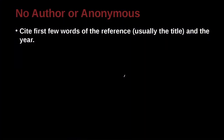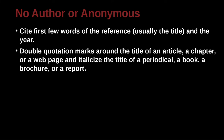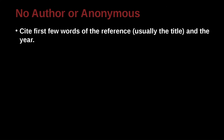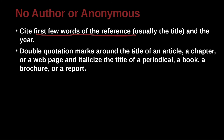Sometimes you cite a paper that has no author, or what we call an anonymous author — an author who didn't provide their name. You can address this by using the first few words of the reference, which is usually the title of the article or the book. Double quotation marks are around the title of an article, a chapter, or a web page, and italicize the title of a periodical, journal name, book name, or a brochure or report.